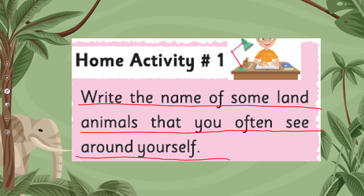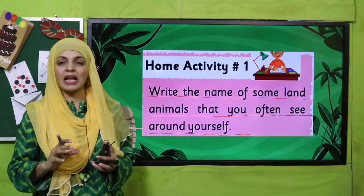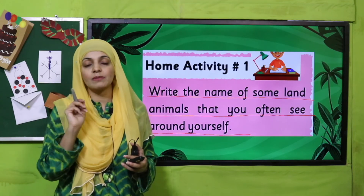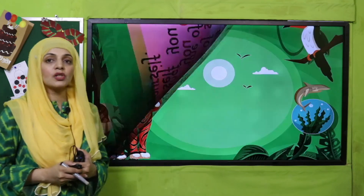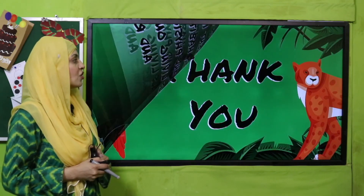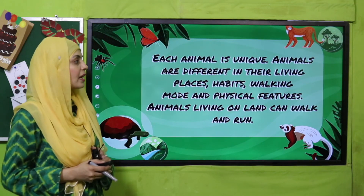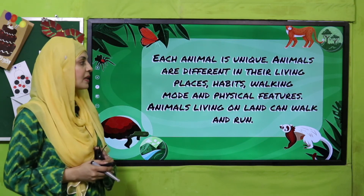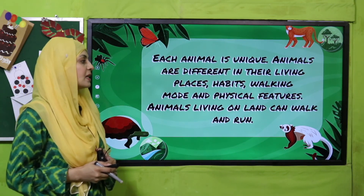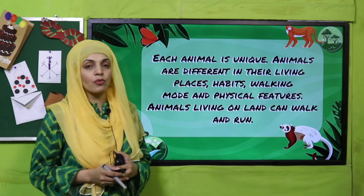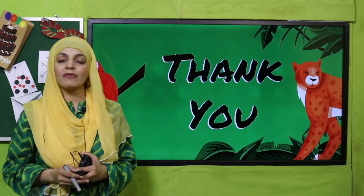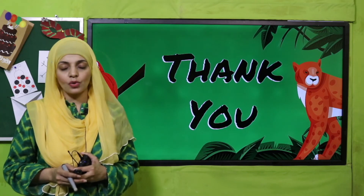My dear students, today we have learned about land animals. Each animal is unique and different in their living places, habits, walking mode, and physical features. Animals living on land can walk and run. I hope now you know all about land animals. Keep everybody around you safe, have a good day — thank you so much.